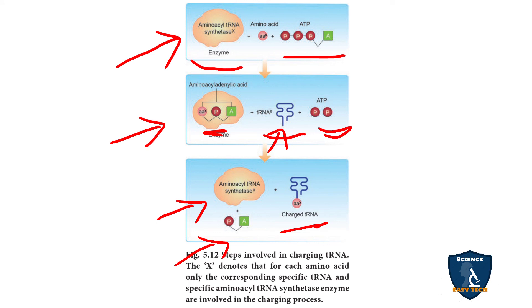The tRNA is called an adapter molecule because it charges with amino acids and carries them to the site of protein synthesis. On the opposite side, in the anticodon loop, it carries the mRNA coding. The 'X' in aminoacyl-tRNA-X refers to the specific amino acid to be carried, so the specific amino acid is charged onto that tRNA.